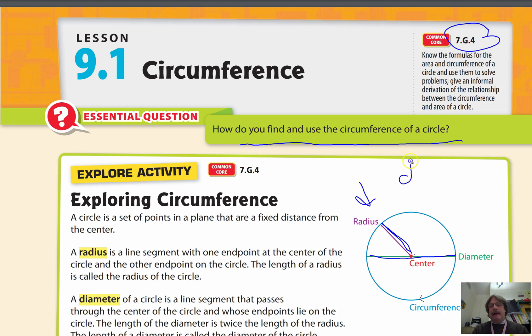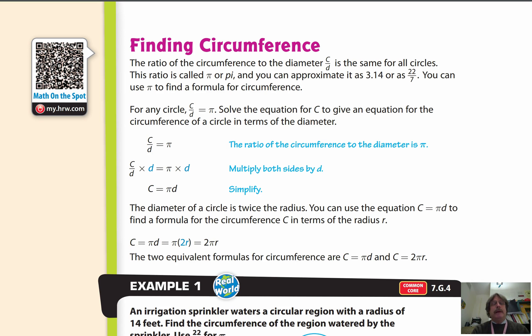So the diameter is equal to twice the radius, because this would be a radius here, and this would be a radius here, so that's two times. And then the circumference is the amount that goes all the way around.